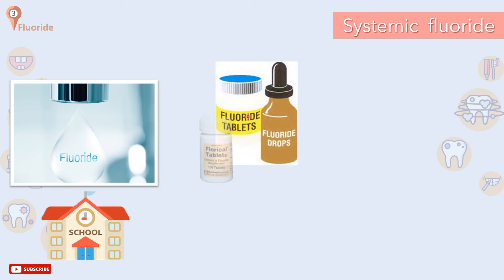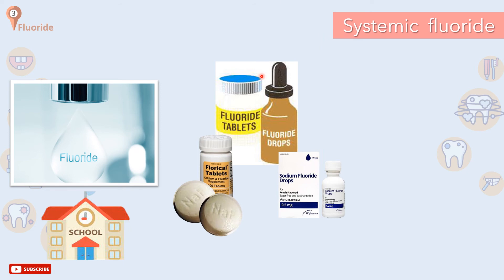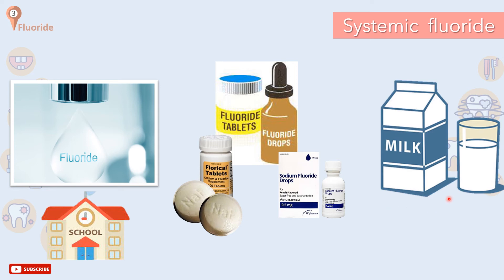Fluoride drops and tablets are another systemic option. The regimen in milligrams per day depends upon the drinking water content of fluoride. This approach can be almost as effective as fluoridated water but requires good parental motivation. Unfortunately, compliance is generally poor and the benefit as a public health measure is questionable. Milk, containing about 2.5 to 7 parts per million of fluoride, has been tried successfully and is effective for rural communities in developing countries where water fluoridation is not feasible.